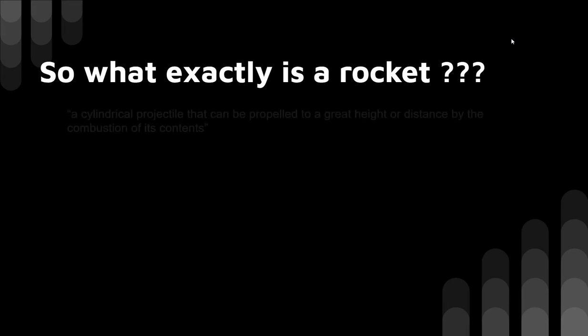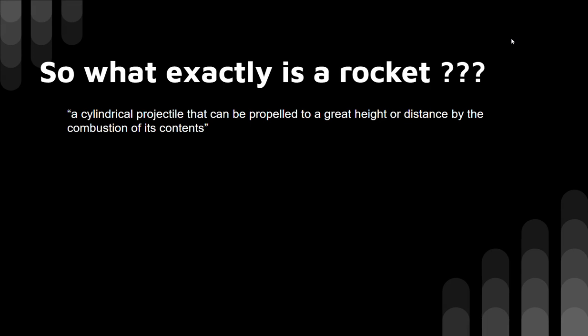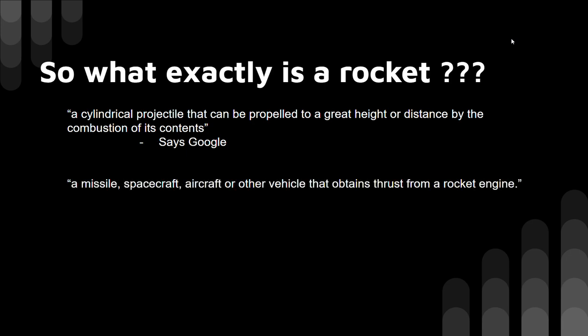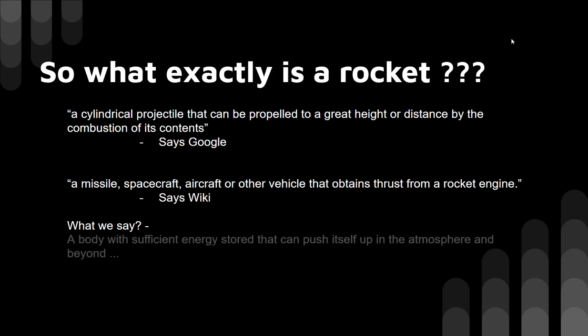Before moving on to the presentation, let's give a quick thought on what exactly a rocket is. Google defines it as a cylindrical projectile that can be propelled to a great height or distance by the combustion of its contents. According to Wikipedia, a missile, spacecraft, aircraft or other vehicle that obtains thrust from a rocket engine is defined as a rocket.